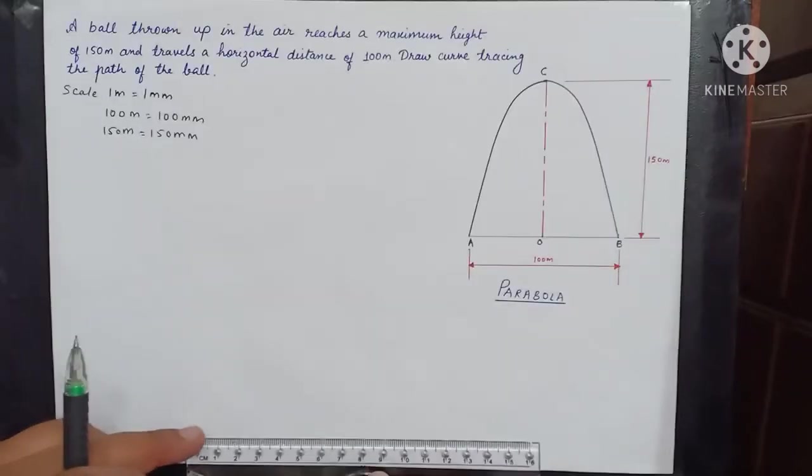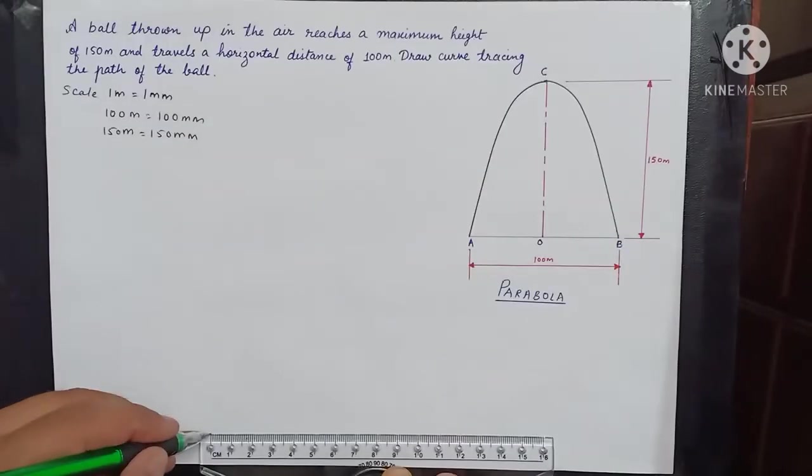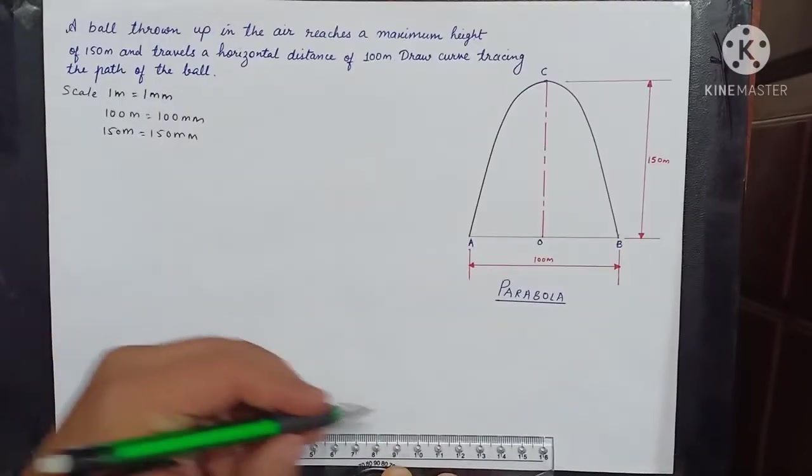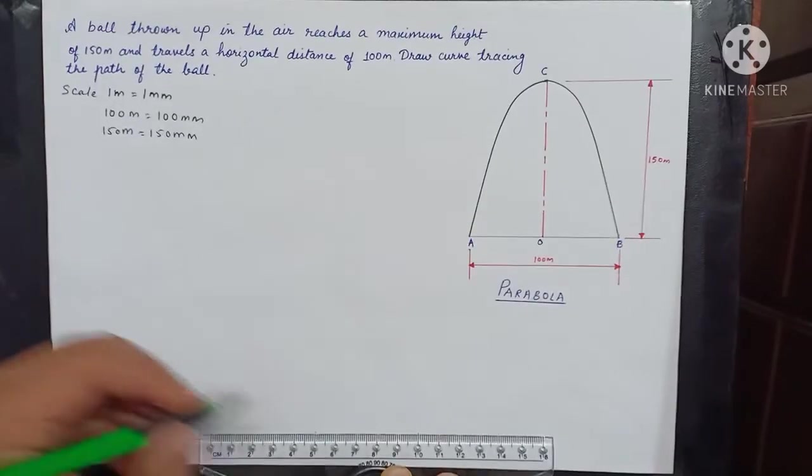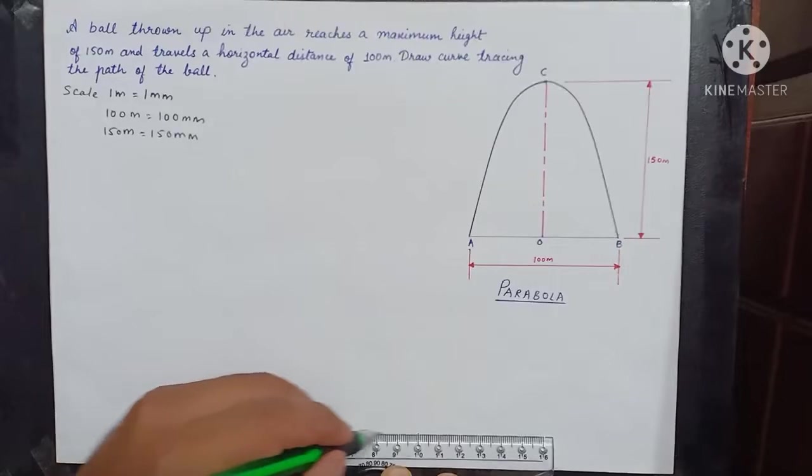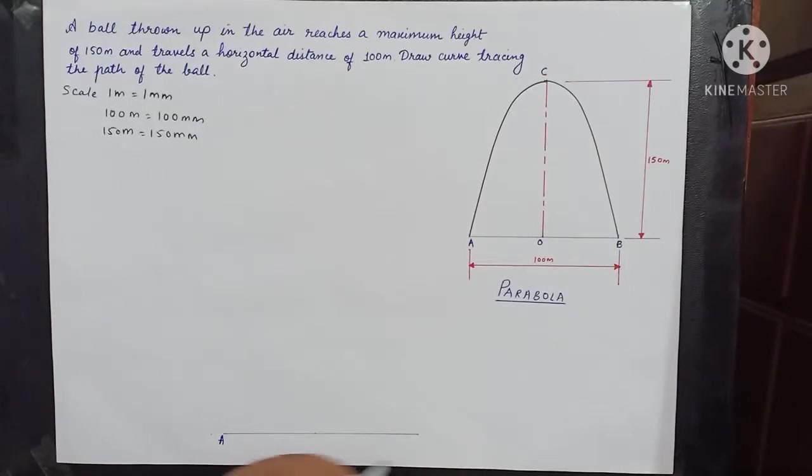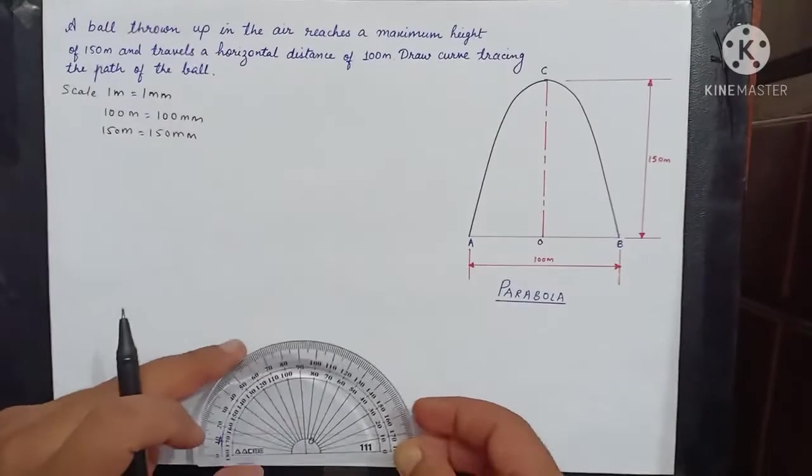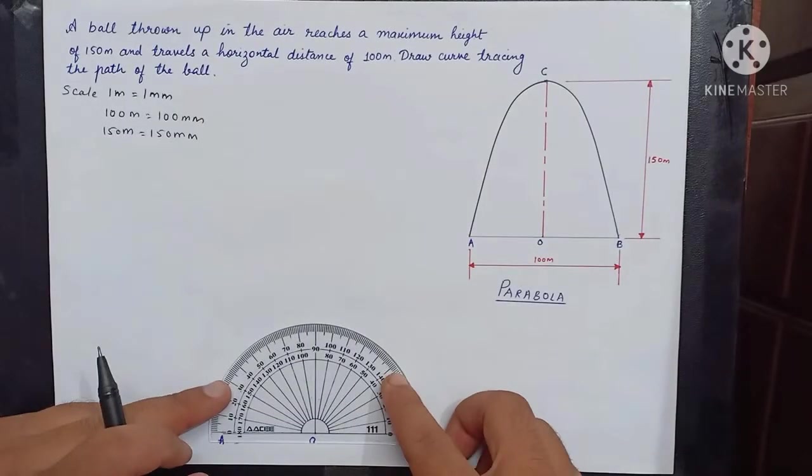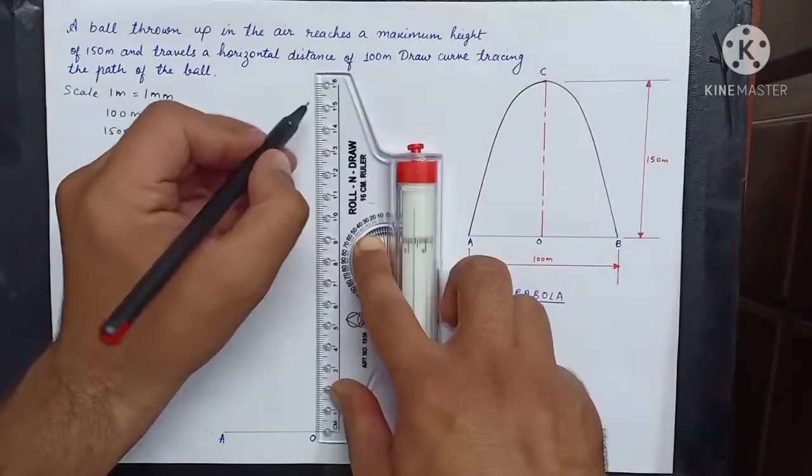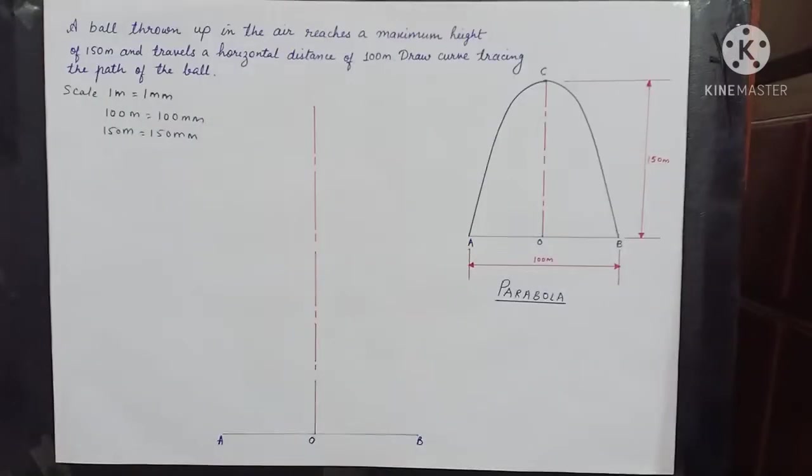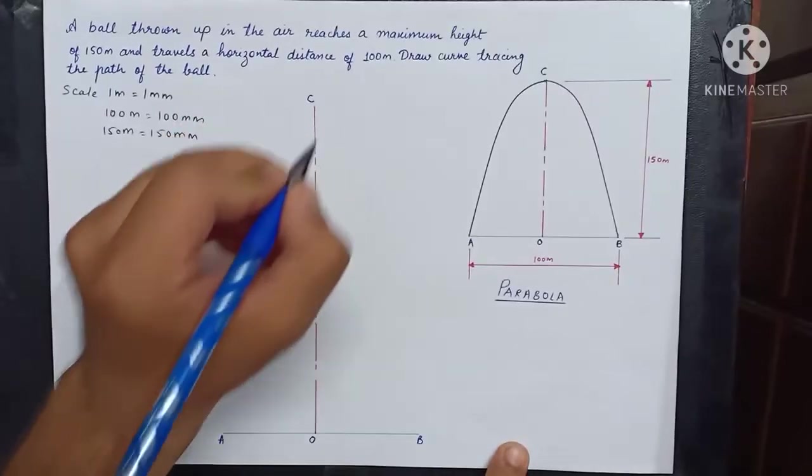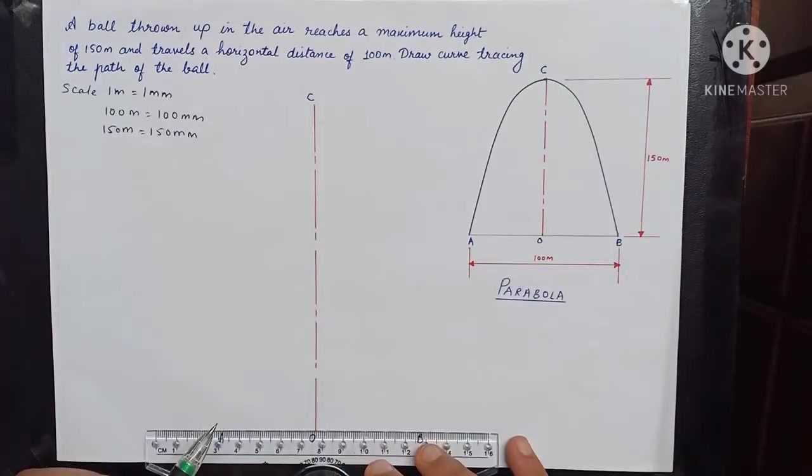Now we start by drawing base AB and the axis OC. Base is 100 millimeters. We will mark the midpoint at 50 millimeters and draw a horizontal line. This will be AB with center O. Then marking a perpendicular, we will draw the axis. Mark this point C. Then by using base and axis we will draw a rectangle.